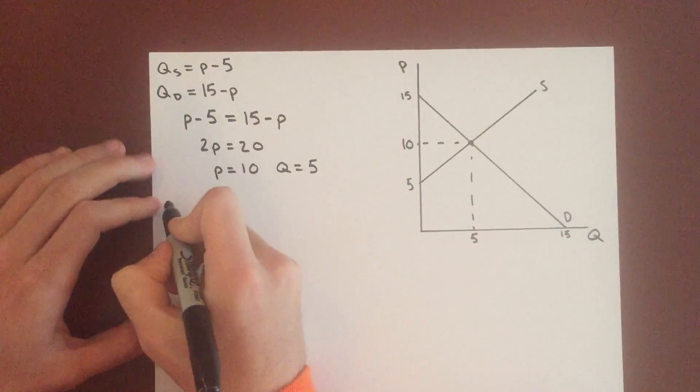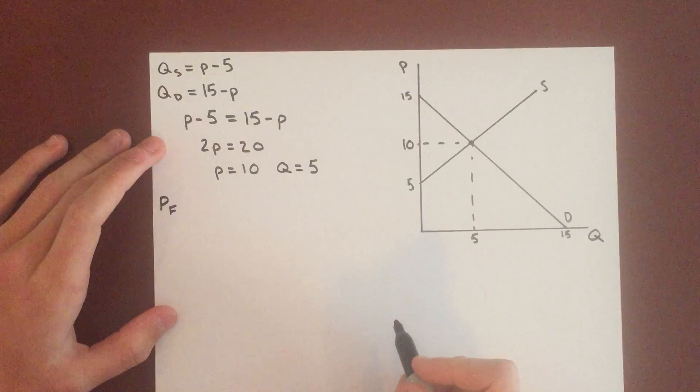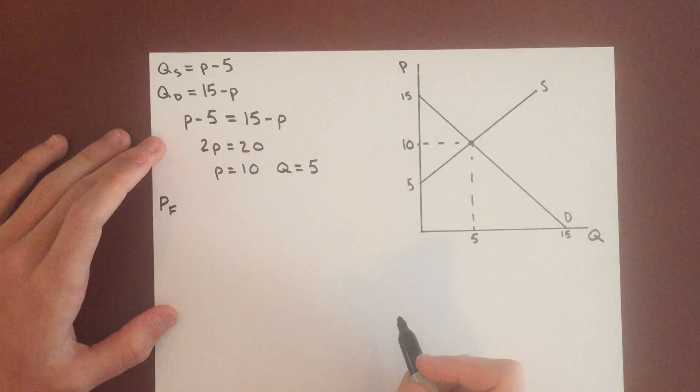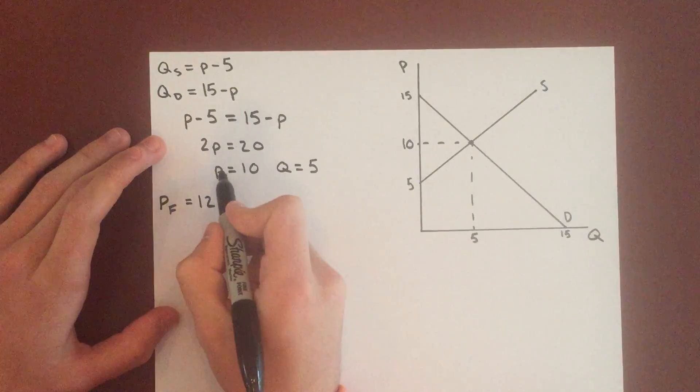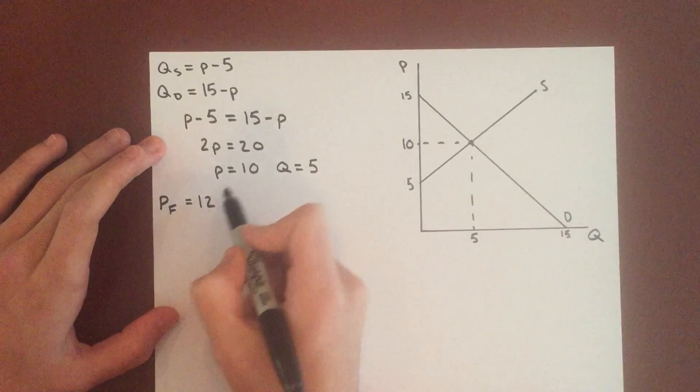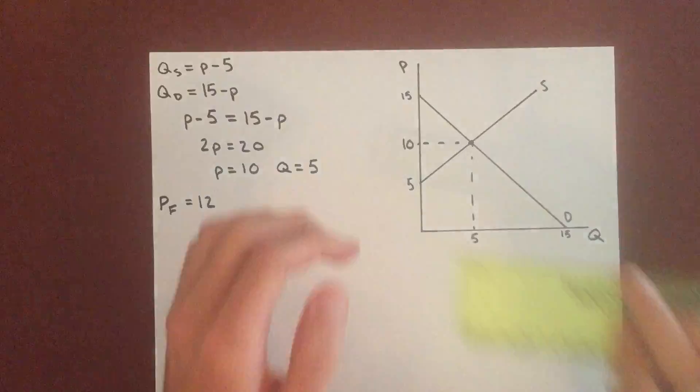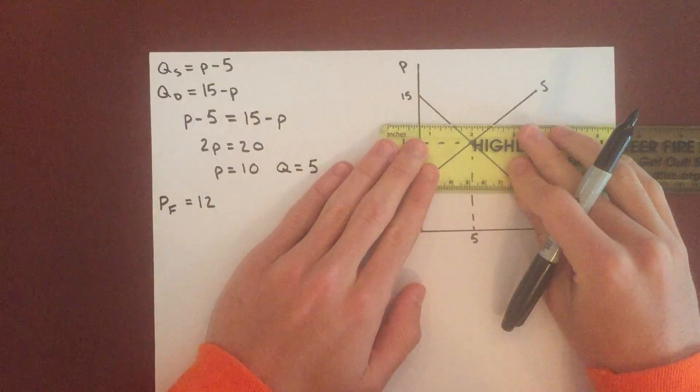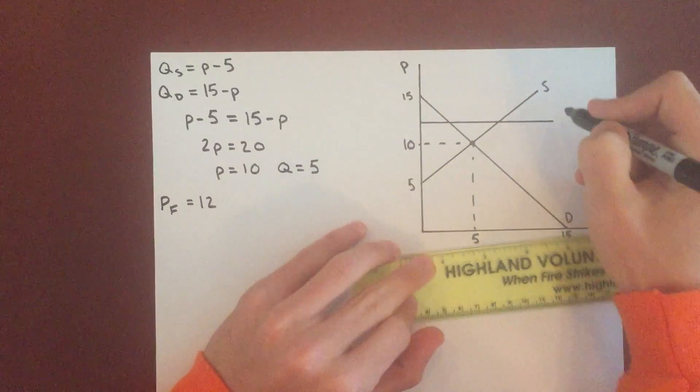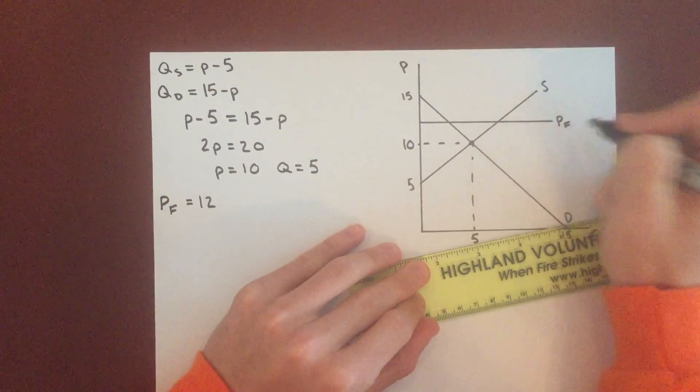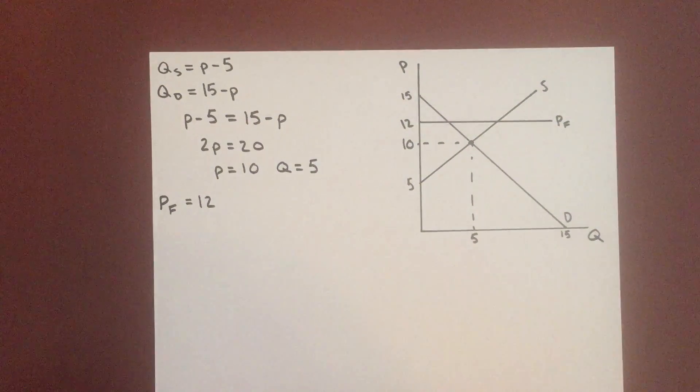So now let's see what happens when you set a price floor, noted by PF, a price floor at 12. Notice the price floor, in order for it to have any effect, it has to be higher than the equilibrium price. So let's write in this price floor of 12. There we go.